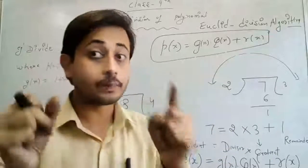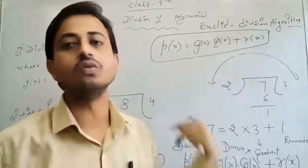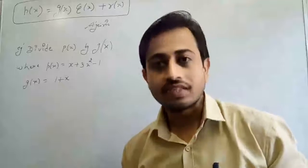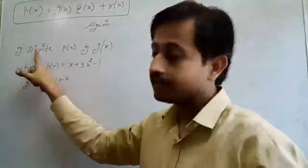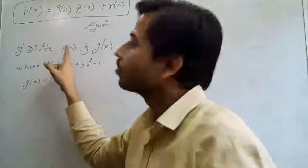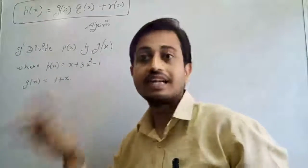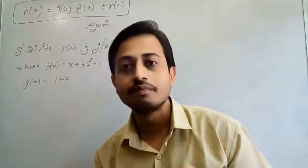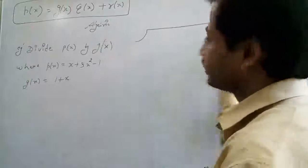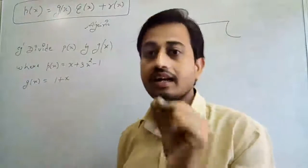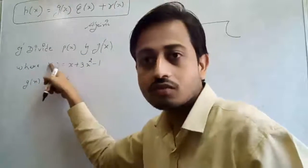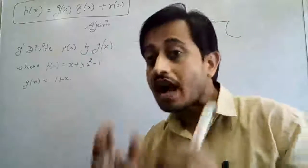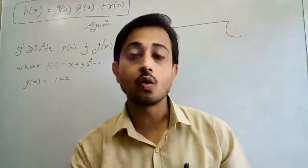Please make a note of the whole thing and keep it in mind, because these questions are very simple once you learn these steps. Now what we have to do is division. The statement says: divide P of X by G of X. P of X is the dividend polynomial and G of X is the divisor polynomial. We know how to write a division. First we write the division symbol, inside which we write the dividend, P of X.